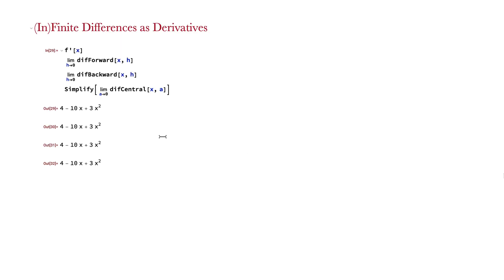If we take these finite differences and scrap the finite part, we can see that no matter which definition you use, if you take the limit as h approaches 0 or a approaches 0, you'll just get the derivative of f of x.